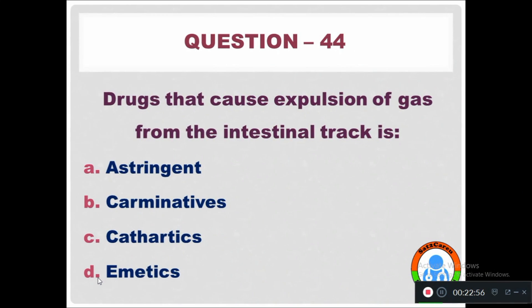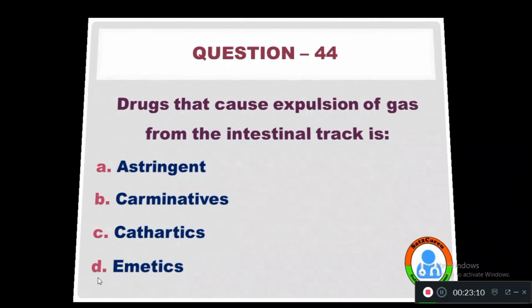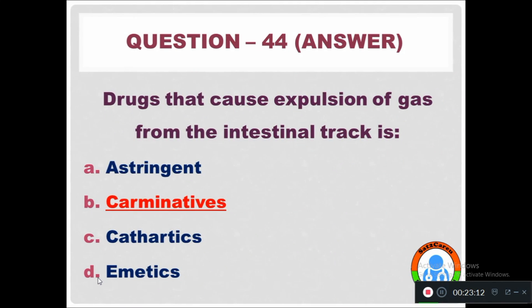Question 44: Drugs that cause expulsion of gas from the intestinal tract are — Option A: Astringents. Option B: Carminatives. Option C: Cathartics. Option D: Emetics. The right answer is carminatives — it is the drug used to remove gas from the intestinal tract.